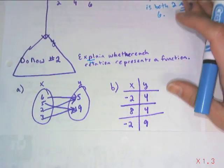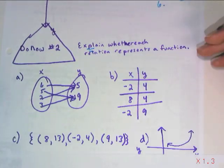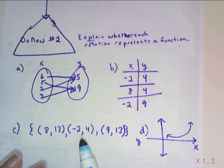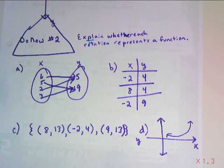So A, here is a map. B, here is a table. C, you're looking at a set of ordered pairs. And then D, you're looking at a graph. So go ahead and pause and explain whether each relation represents a function.